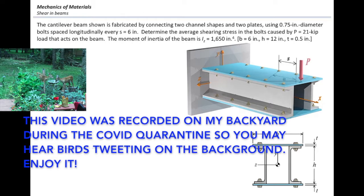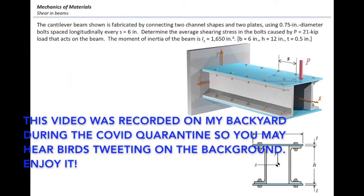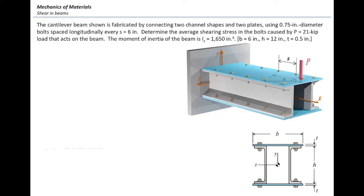In this problem, a cantilever beam is fabricated by connecting two C-channel shapes on the sides and two plates on the top and on the bottom. There are bolts with three-quarter inch diameter that are spaced every six inches for connecting these parts together. We want to determine what is the average shear stress in the bolts caused by a concentrated force of 21 kips acting on the tip of the beam.